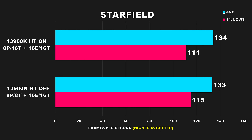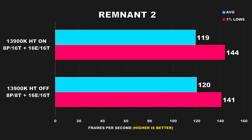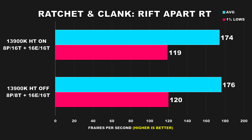Next is Starfield, tested in New Atlantis — a populated city with lots of NPCs, making it a fairly CPU-bound area. There's not a huge difference here; the 1% lows with hyper-threading disabled were better by about 3%, so I'd consider that a wash. Remnant 2 is also a newer title running on Unreal Engine 5, and again there's not a huge difference between the two configurations — you're going to see that occur often with other titles, so we'll get through these pretty quickly.